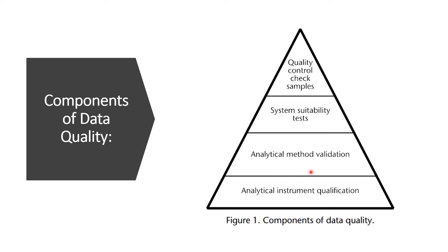Next is analytical method validation. Whichever analytical method you will use to analyze the samples, that method should be validated. The use of a validated procedure with a qualified analytical instrument will provide confidence that the procedure will generate test data of acceptable quality. Next is system suitability test. In the system suitability test, you verify that the system will perform in accordance with the criteria mentioned in the procedure. These tests are performed along with the sample analysis to ensure that the system performance is acceptable at the time of the test. For example, in the HPLC system, you use the SST solution to check the resolution, peak symmetry, retention time, and repeatability to ensure that the method is functioning correctly and consistently.